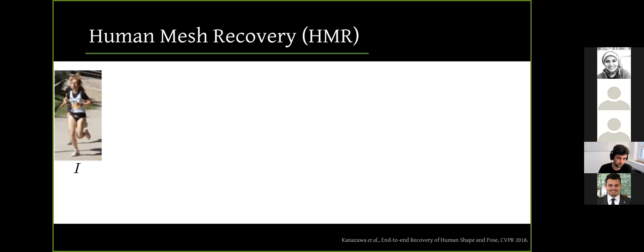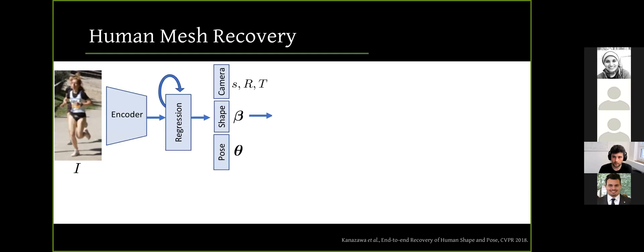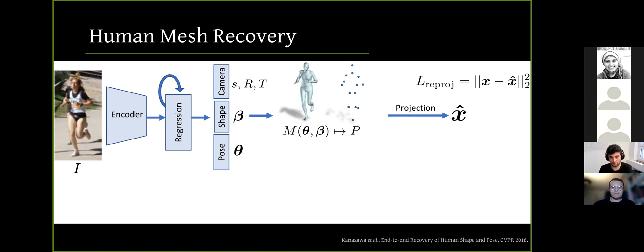Human mesh recovery passes an input image through a convolutional encoder. And these convolutional features of the image are sent to a 3D regression module whose objective is to infer the 3D human body and the camera. Then these 3D joints are projected to 2D using the estimated weak perspective camera. A reprojection loss is minimized to match the projected and the ground truth 2D key points. So the reprojection loss encourages the 2D joint locations.